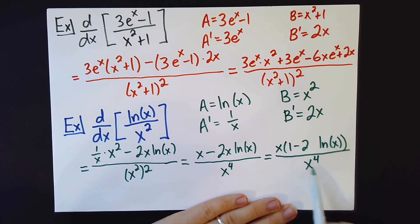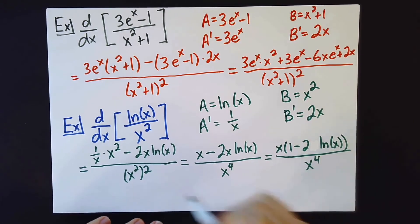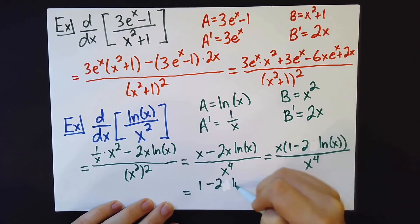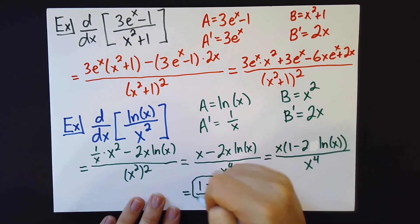And I can now cancel that x with one of the four x's in the denominator. And there we go.